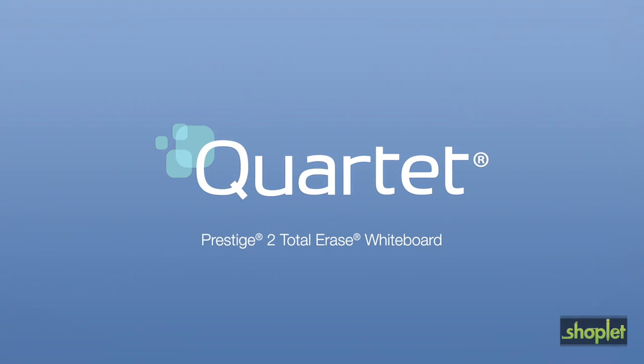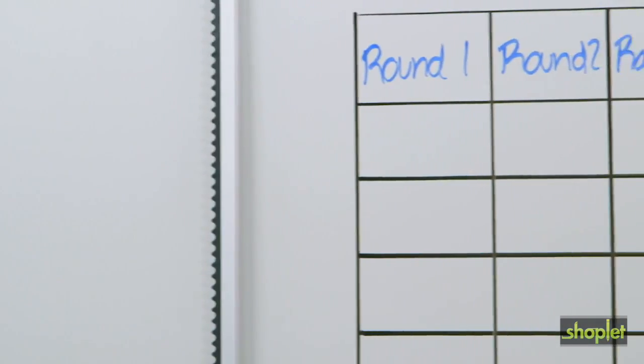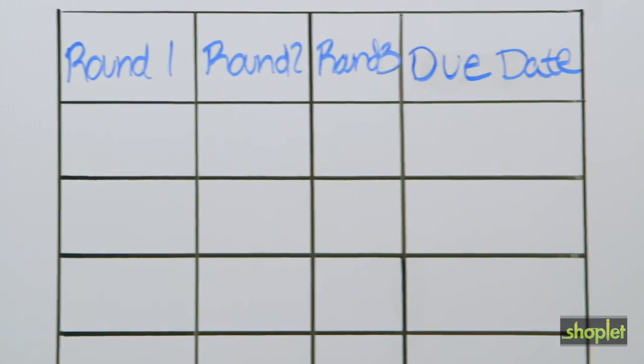Quartet Prestige II Total Erase Whiteboard. The Quartet Prestige II Total Erase Whiteboard is the perfect whiteboard to fit your conference room and budget needs.